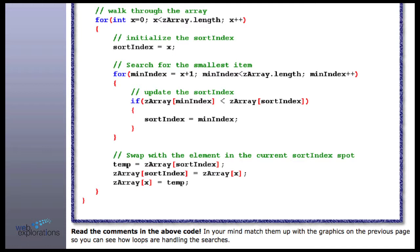Then we loop through it, look for the smallest, and when we find it, we change our sort index and do our swap. We take one of the items, put it in a temporary spot, take our sorted item and put it at the beginning, then take our temporary spot and put it back — a typical swap. We have two for loops: one looping through our array, then one looping to find the smallest. When we find it, we do our swap and loop through the next set of the array, which is a little shorter, a little shorter, a little shorter.